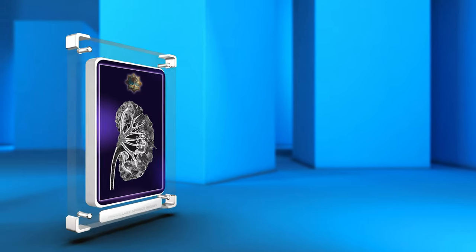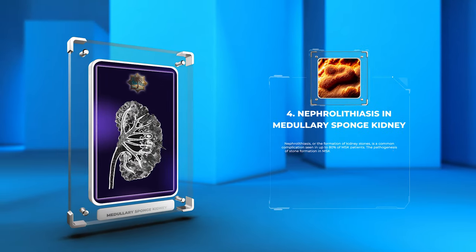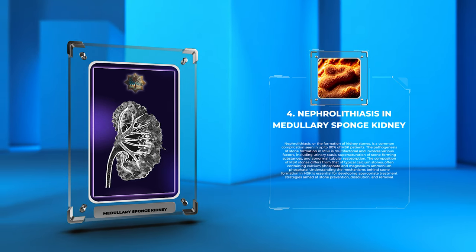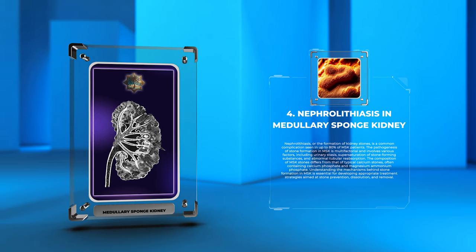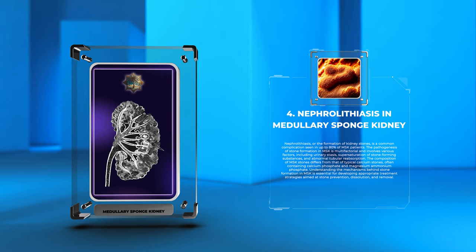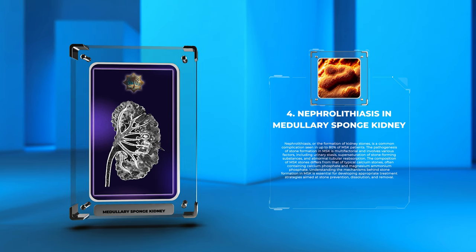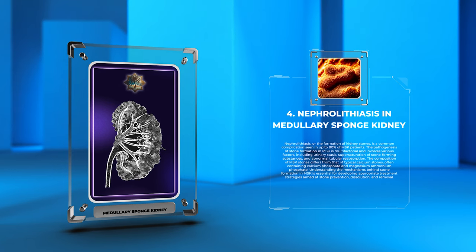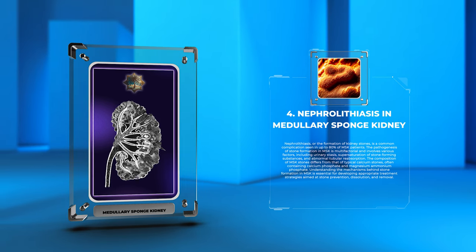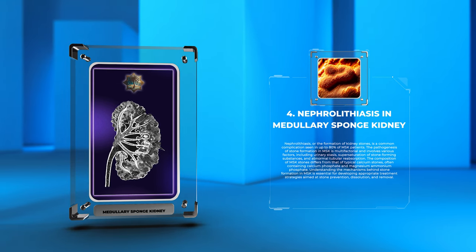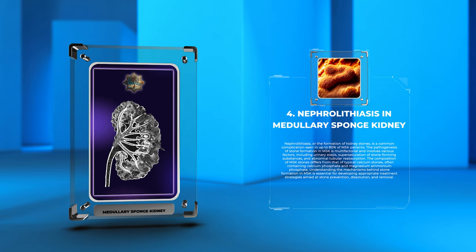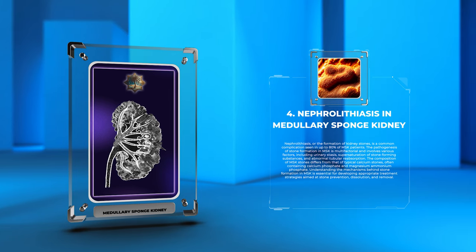Nephrolithiasis, or the formation of kidney stones, is a common complication seen in up to 80% of MSK patients. The pathogenesis of stone formation in MSK is multifactorial and involves various factors, including urinary stasis, supersaturation of stone-forming substances, and abnormal tubular reabsorption. The composition of MSK stones differs from that of typical calcium stones, often containing calcium phosphate and magnesium ammonium phosphate.